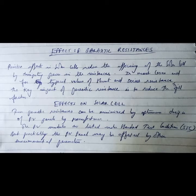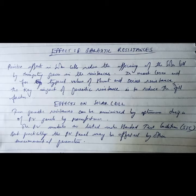The effects of parasitic resistance in a solar cell reduce its efficiency by dissipating power in the resistance. In most cases, for typical values of shunt and series resistance, the key impact of parasitic resistance is to reduce the fill factor.